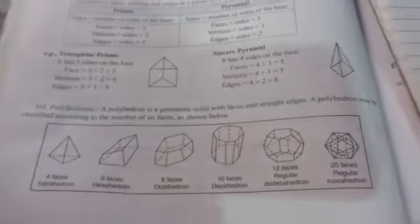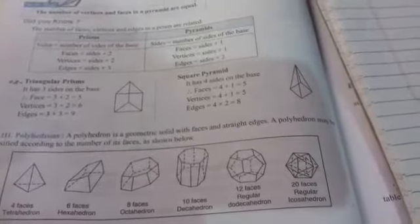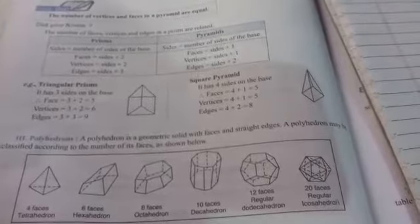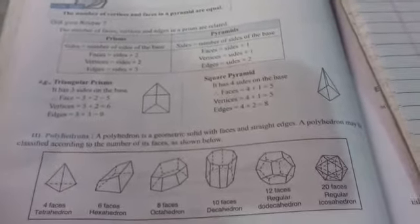Visualizing solid shapes, chapter 15. Today we are going to talk about what is polyhedron figures and what is non-polyhedron figure. You can see that in your book it is given that a polyhedron is a geometric solid with faces and straight edges. A polyhedron may be classified according to the number of its faces.